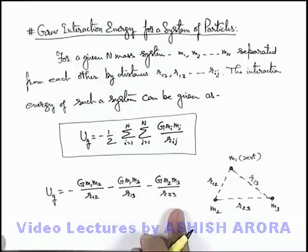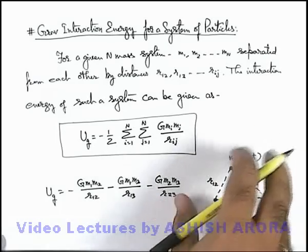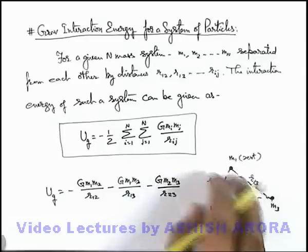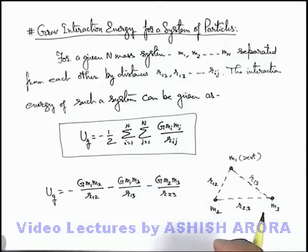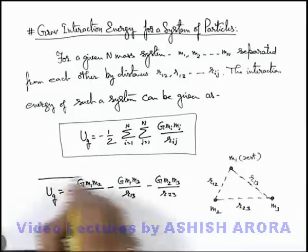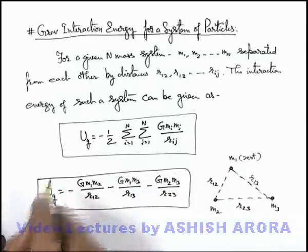So this is the way how we can find, and even if all the three will be brought together to this configuration, then also work will be same as gravitational field is conservative.